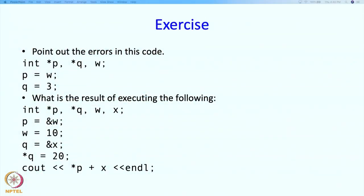You can also pass a pointer to a function as an argument, provided the corresponding parameter is of the right type — that is, t*. If you have a variable of type t*, you can pass it as an argument to a function if the corresponding parameter is also of type t*.